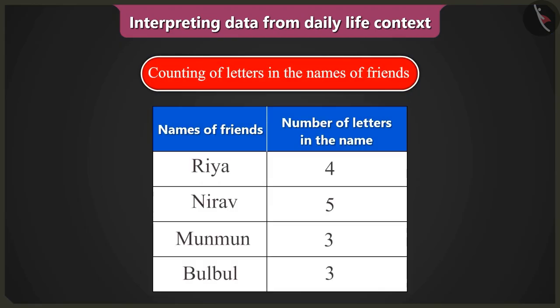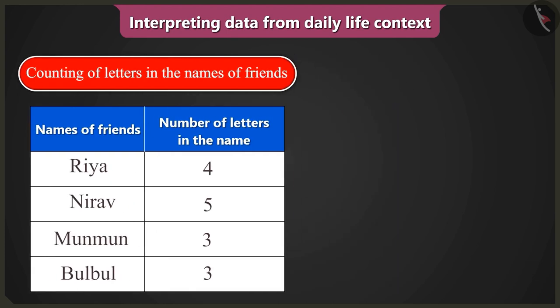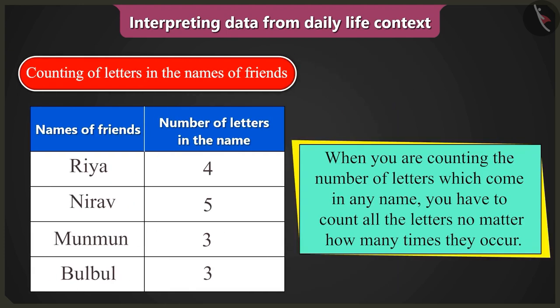Then how come you made a mistake in filling this table? Look, you have to write the number of letters of the friends' names in this table. But when you are counting the number of letters in any name, you have to count all the letters, even if they are repeated.